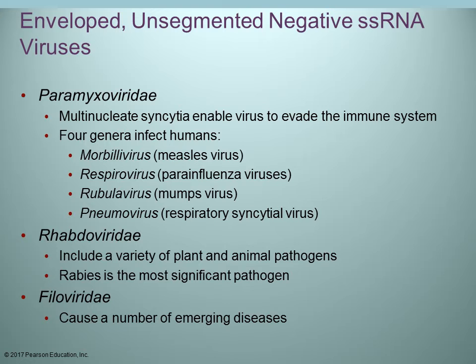Moving on to additional RNA viruses: negative single-stranded viruses within the family paramyxoviridae. There are four different groups: the morbillivirus, which causes measles; respirovirus, which causes parainfluenza; rubulavirus, which has the mumps virus; and pneumovirus, which has respiratory syncytial virus. Also the rhabdoviridae and filoviridae.